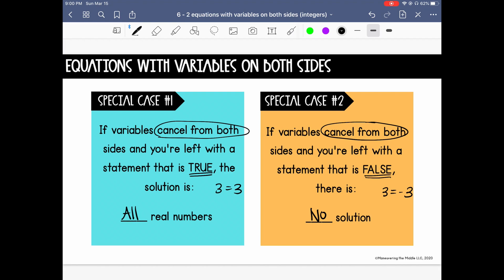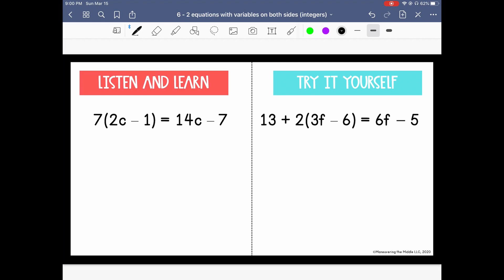So let's see what I mean. Look at the first equation on the left. We will start here by distributing the 7. That's going to give us 14c minus 7 equals 14c minus 7.